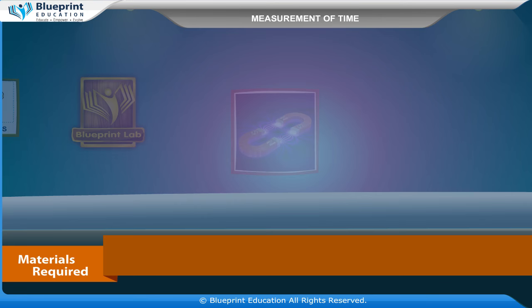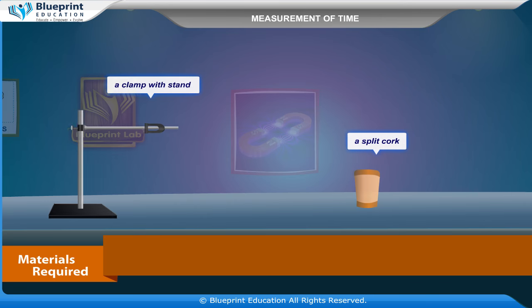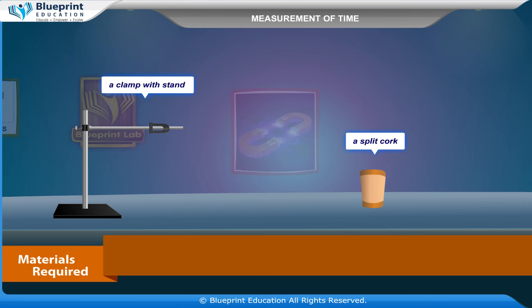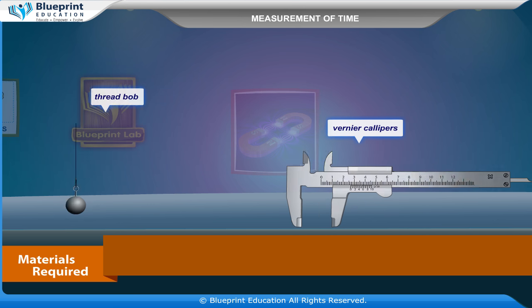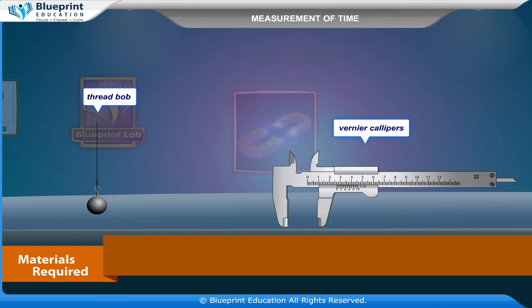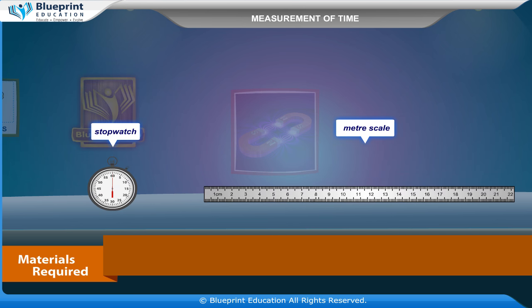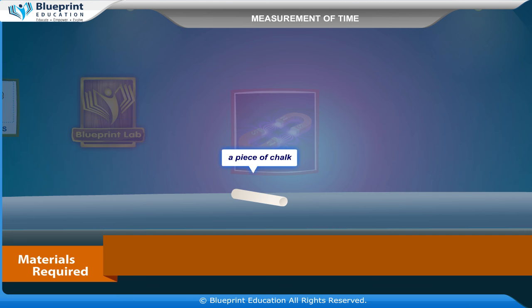The materials required are a clamp with stand, a split cock, thread bob, vernier calipers, stopwatch, meter scale, and a piece of chalk.